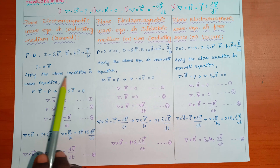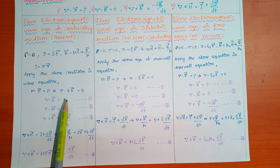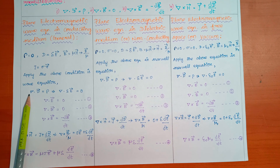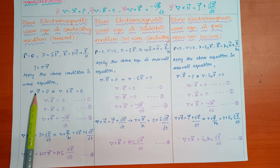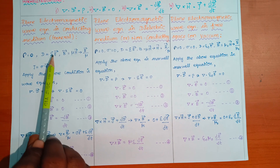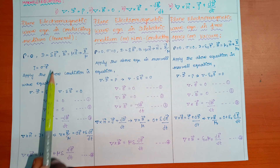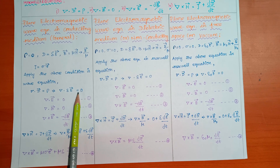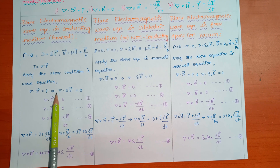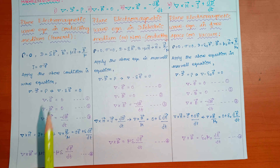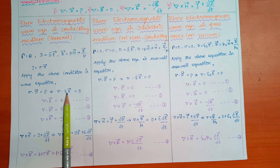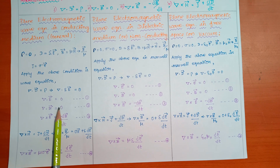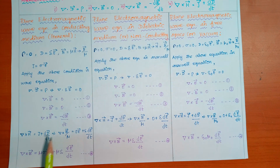We apply the above equations in Maxwell's equations for conducting medium. From equation 1: del dot D vector equal to rho, and D vector equal to epsilon E. Since rho equals zero, del dot epsilon E vector equals zero, so del dot E vector equals zero. From equation 2: del dot B vector equal to 0, which is already satisfied.